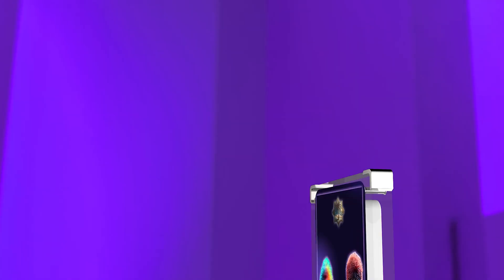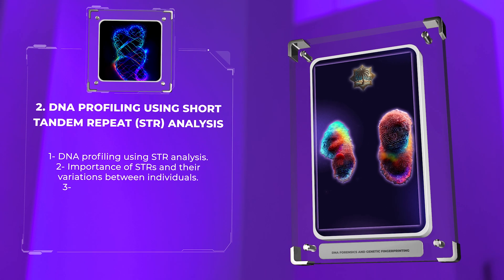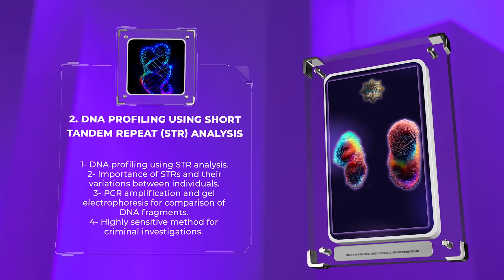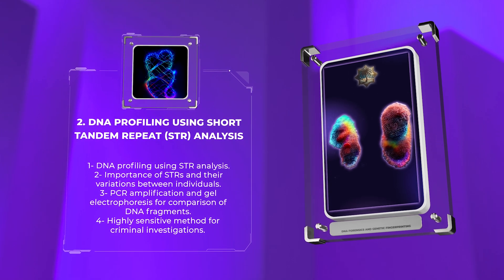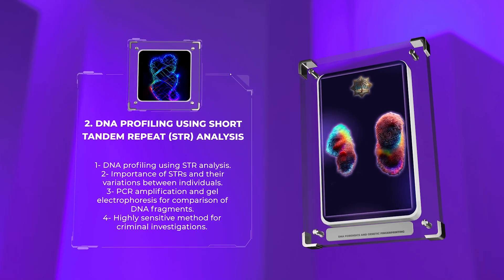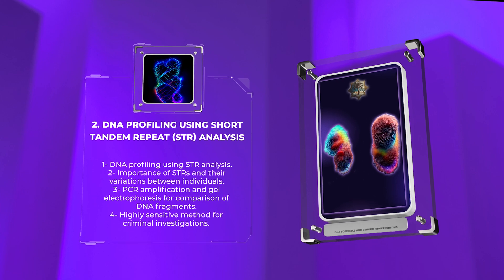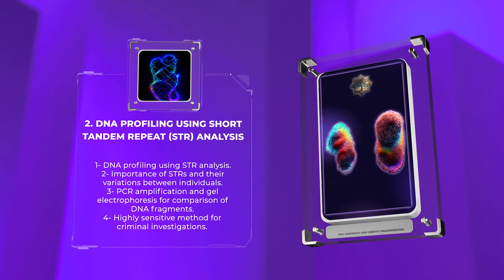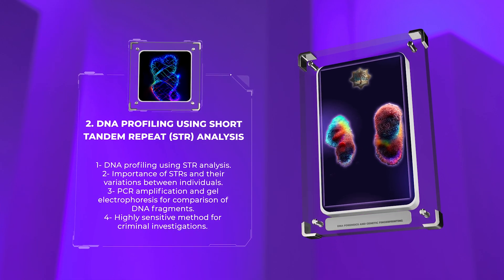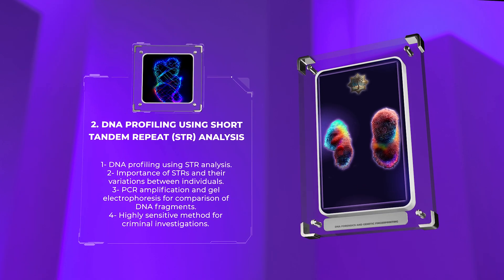In the section on DNA profiling using short tandem repeat (STR) analysis, we learn about the importance of STRs and how they vary between individuals. Through PCR amplification and gel electrophoresis, scientists can compare DNA fragments to determine unique alleles and differentiate individuals. This highly sensitive method has greatly improved criminal investigations.